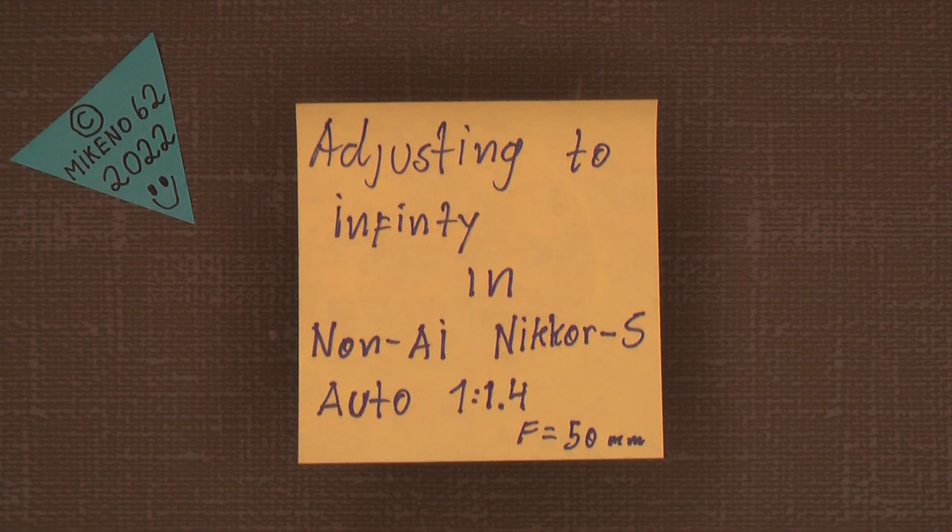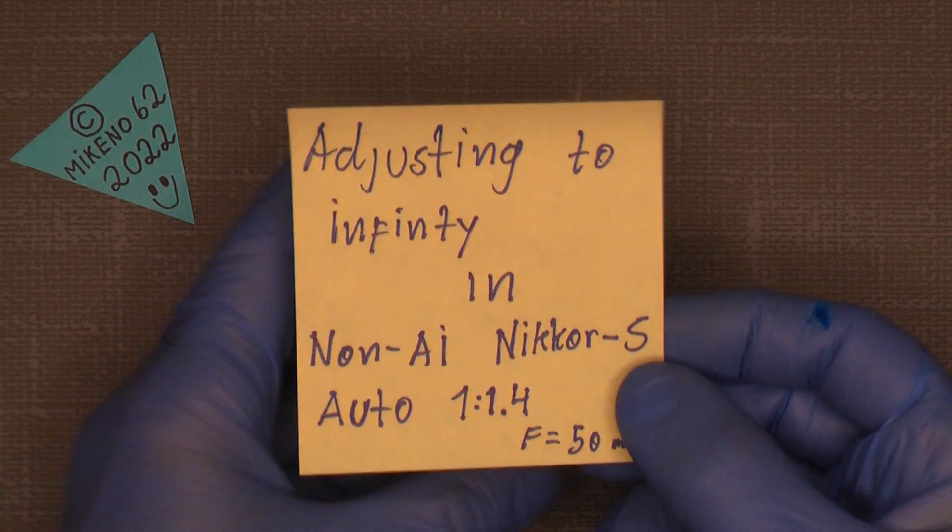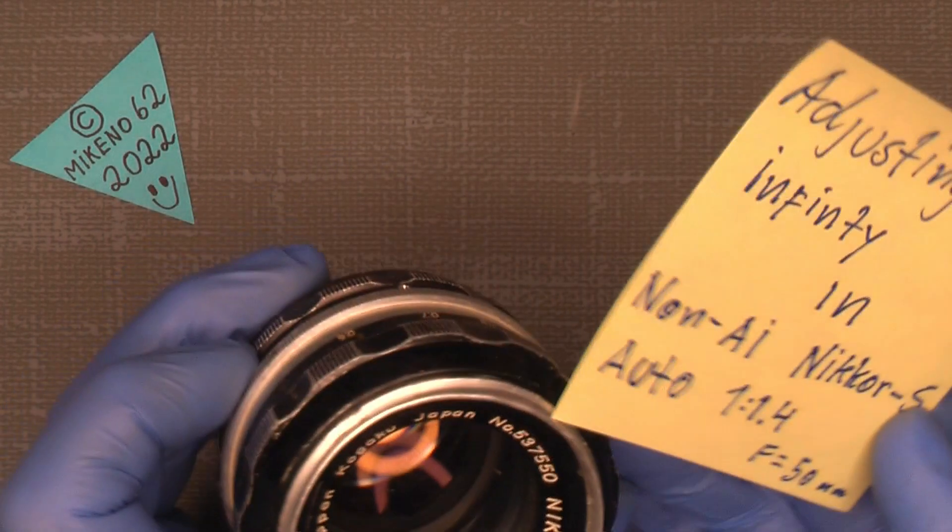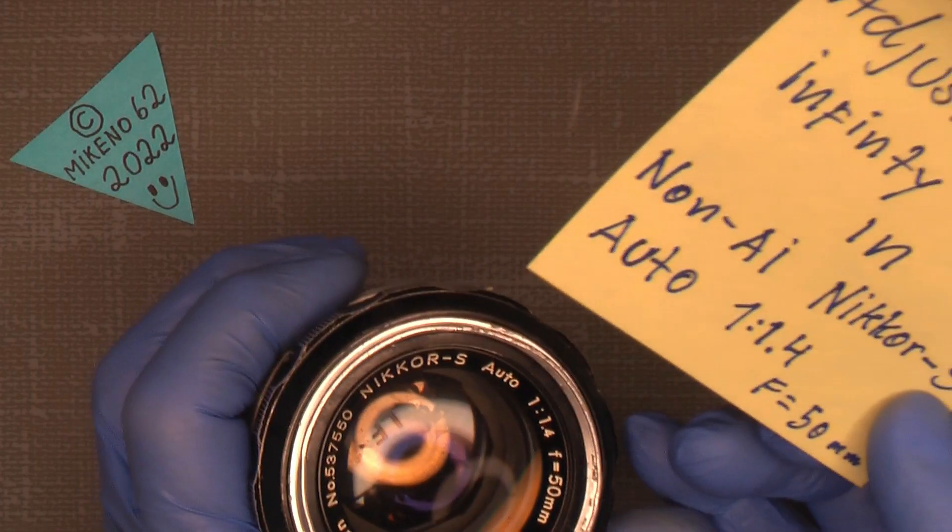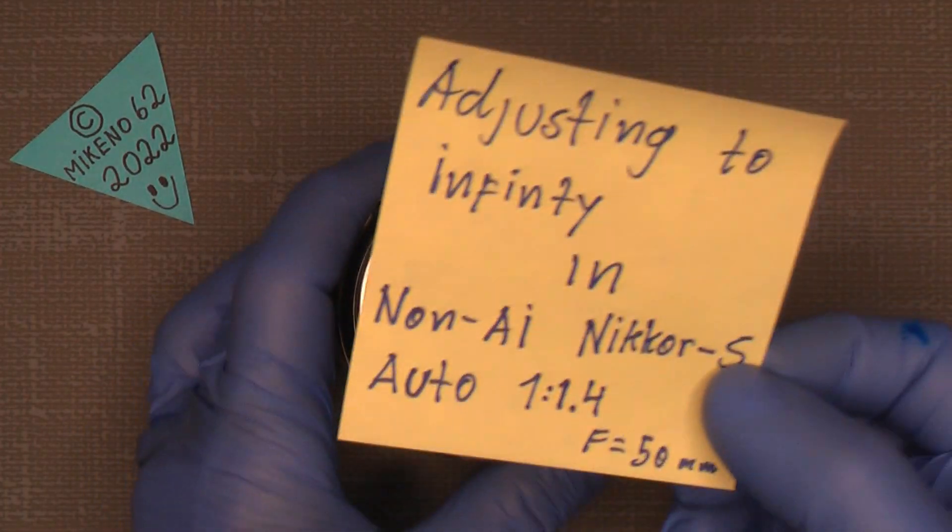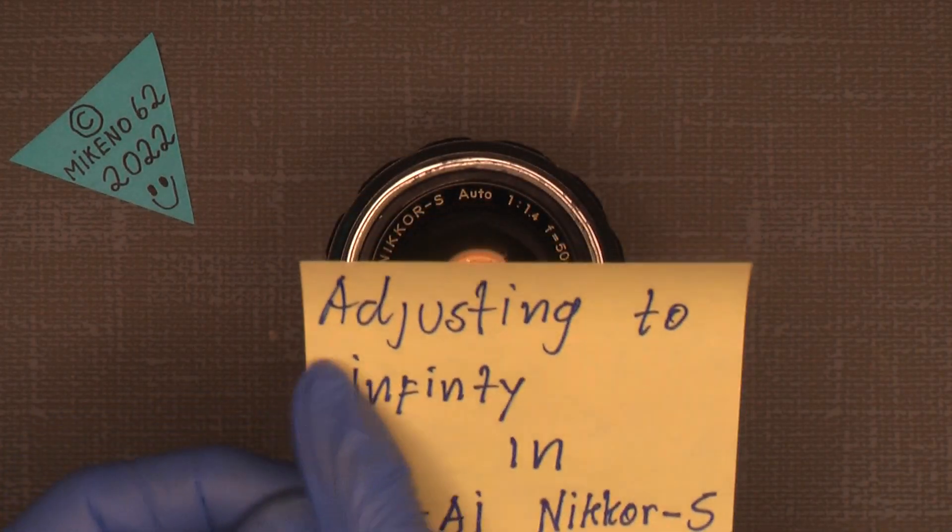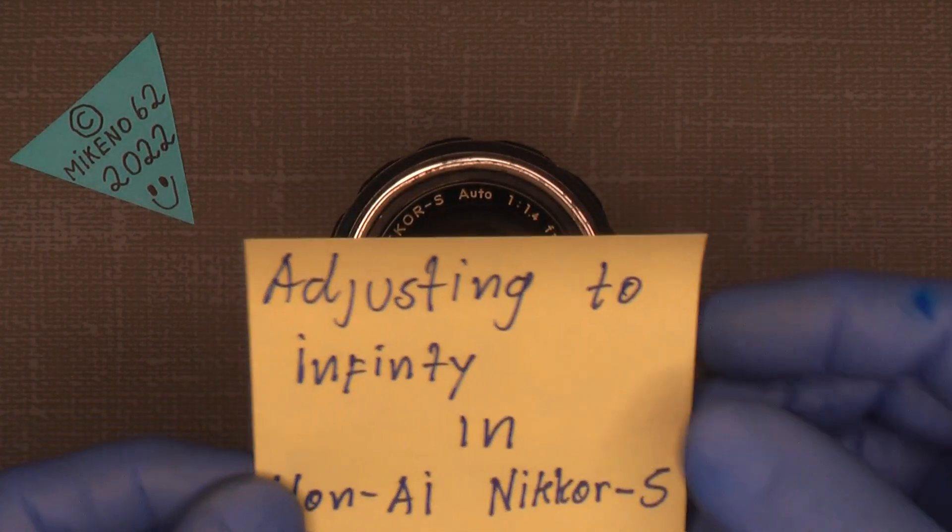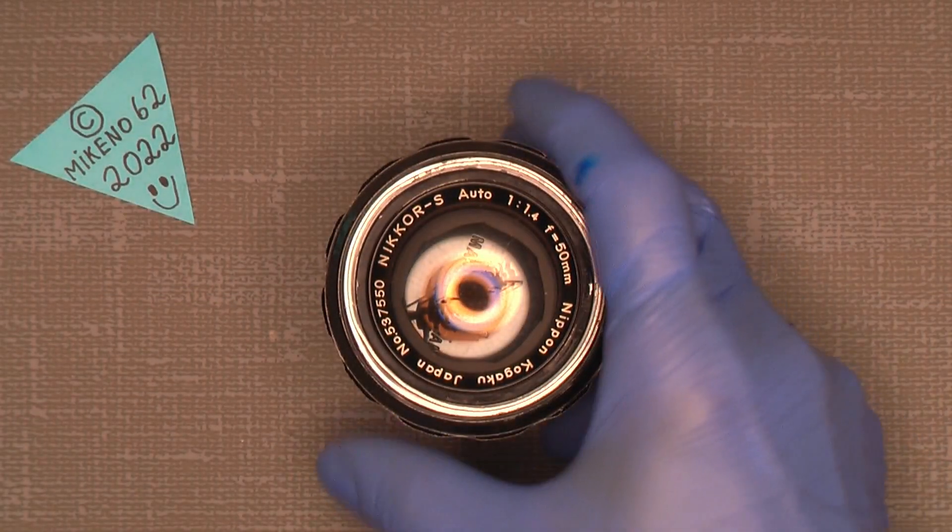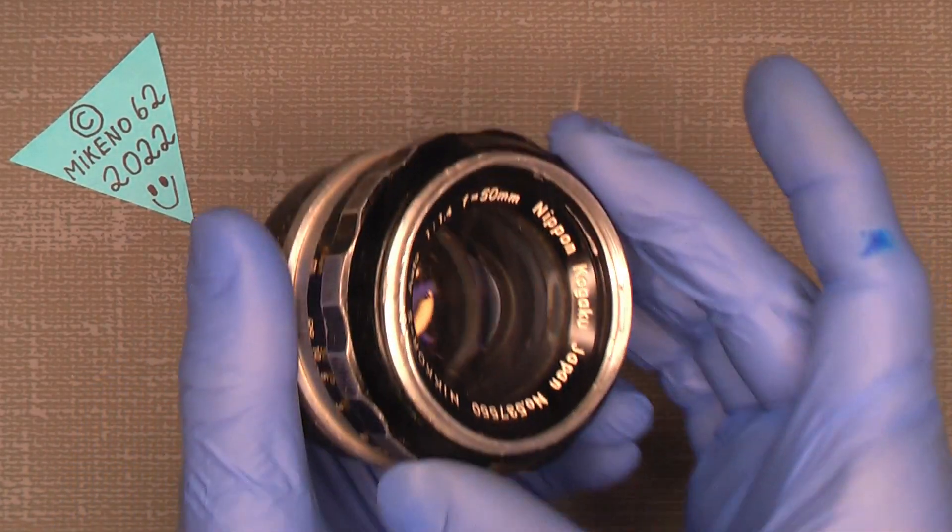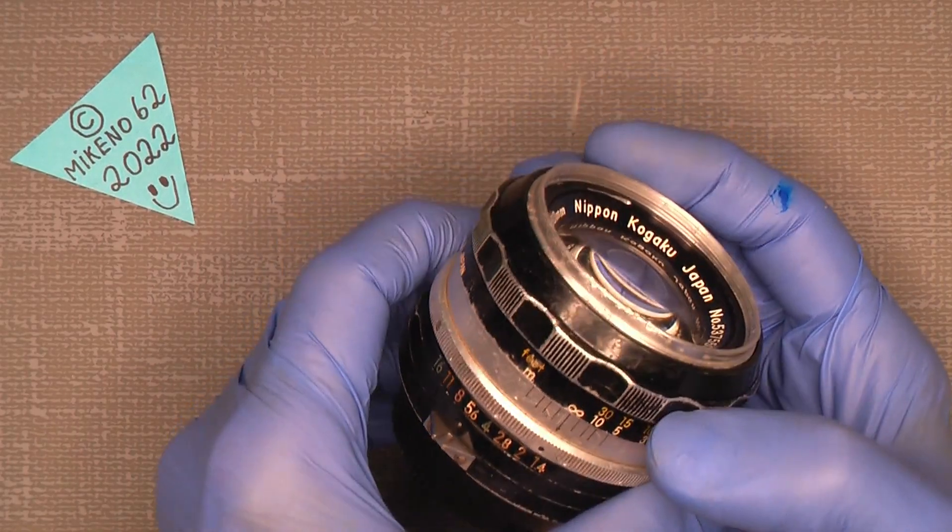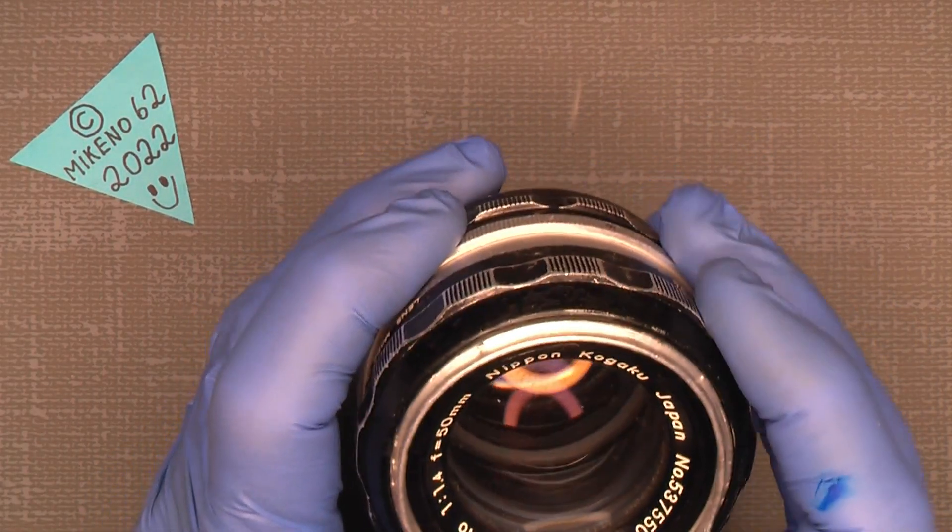Hello everybody and welcome to another tutorial in camera and lens repair. This time I will take my old, really old Nikkor S, non-AI Nikkor S Auto 1.4 50mm, and I will show you how you can adjust it to infinity or maybe over infinity.